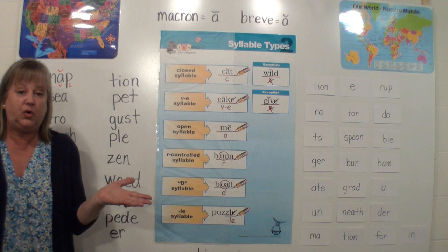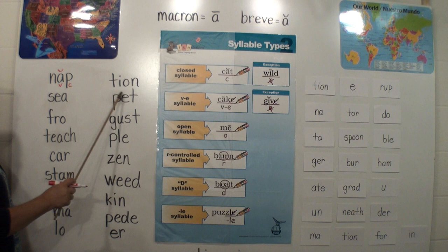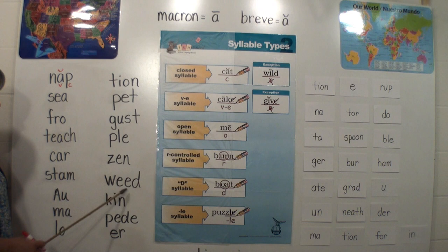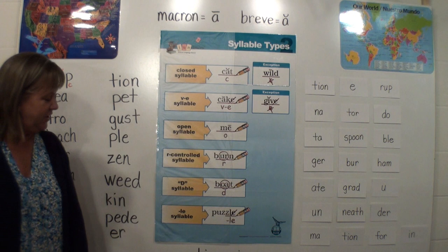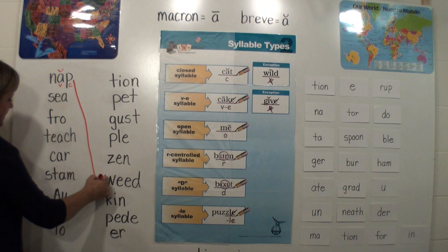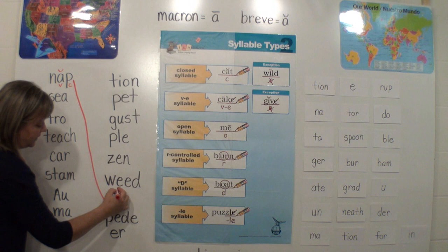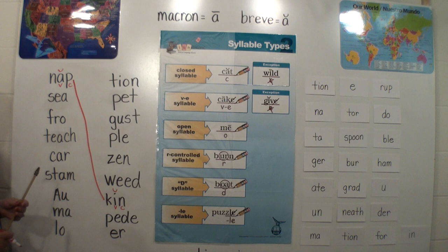This is how you can read nonsense words — words you have never seen before. Because you understand the pattern, you can read them, even if they're like Dr. Seuss words. Nap — can we find an ending over here that would make a word? We have shun, pet, gust, pull, zen, weed, kin, peed, er. It goes right here: nap + kin = a napkin. Two-syllable word. Both syllables are closed: one vowel closed in by a consonant gives us the short vowel sound. Napkin.